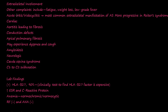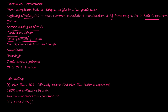The extraskeletal involvement — other complaints include fatigue, weight loss, and low-grade fever. You can have acute iritis or iridocyclitis, which is eye inflammation. That's the most common extraskeletal manifestation. Eye inflammation is more common in Reiter's syndrome than in AS. You can have cardiac problems — inflammation of the aorta leading to fibrosis, and conduction defects inside the heart where the Purkinje fibers and nerve signals aren't working properly. You can also have apical pulmonary fibrosis at the top of the lungs.